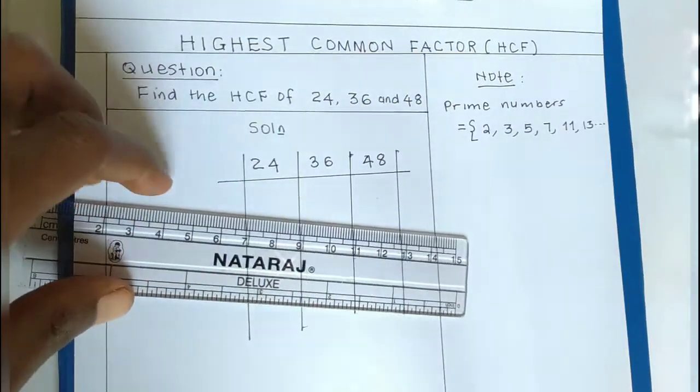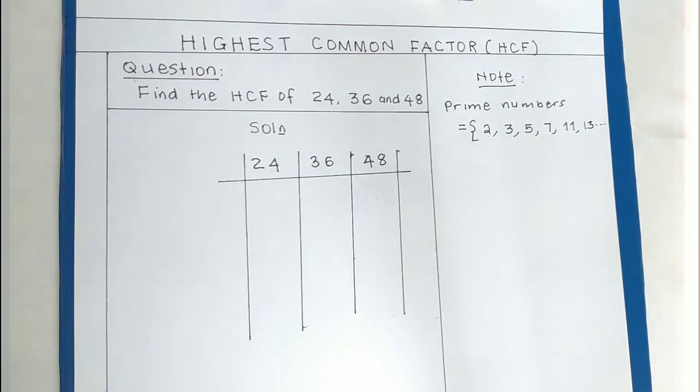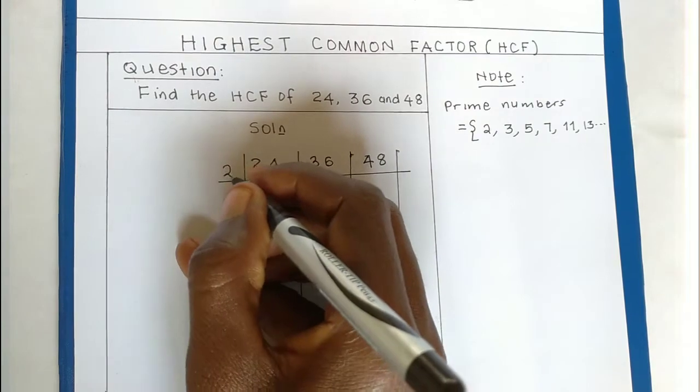Now the next thing to do is look for the common divider, the common prime divider of these three numbers. Looking at the prime numbers above, I will start with 2. You see 24 is divisible by 2, 36 by 2, and even 48. So let's divide by 2.